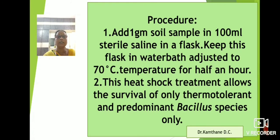Procedure: Firstly, add 1 gram soil sample in 100 ml sterile saline in a flask. Keep this flask in water bath adjusted at 70 degree Celsius for 30 minutes. This heat shock treatment causes the survival of only thermotolerant and predominant Bacillus species present in the soil while rest of the bacteria get killed due to this heat treatment.